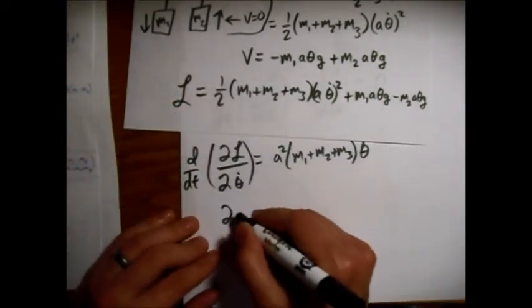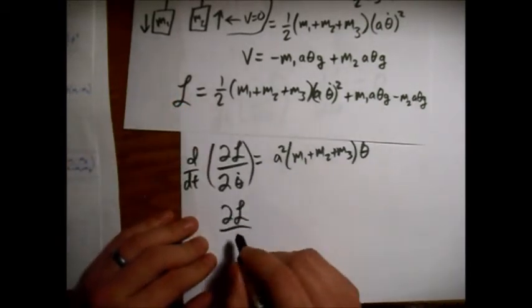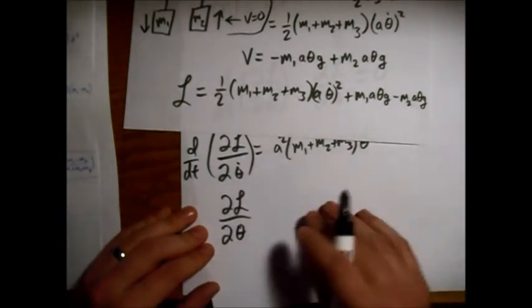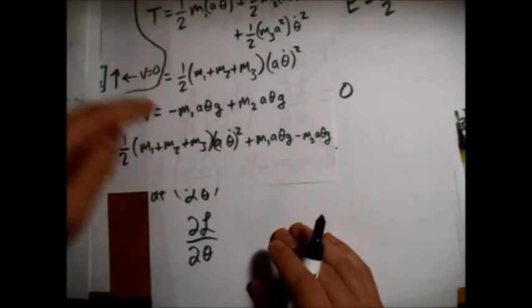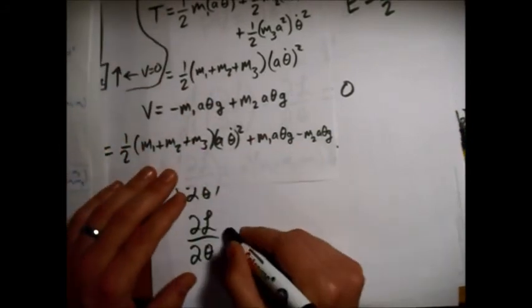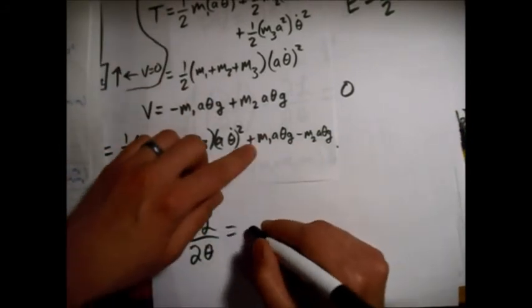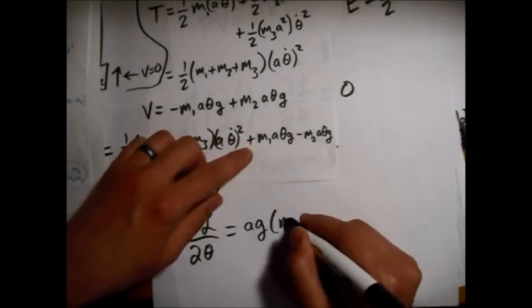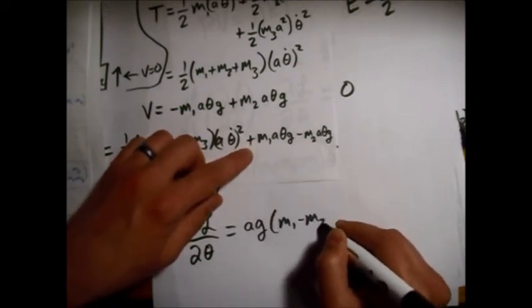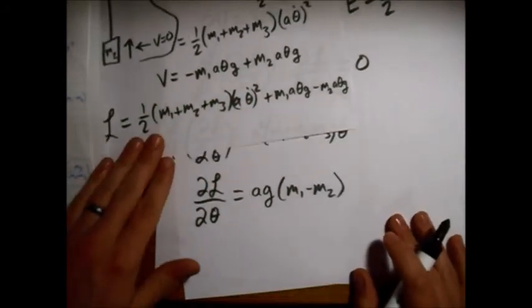So now we'll find our partial derivative of Lagrangian with respect to theta. And so that we just get from this term here, which is just, we'll put the a g out in front. M1 minus M2. Alright.